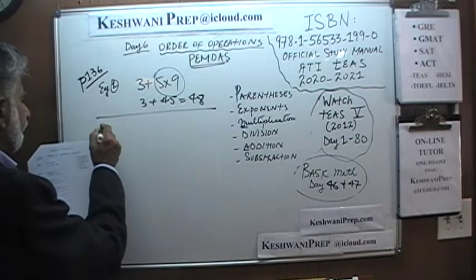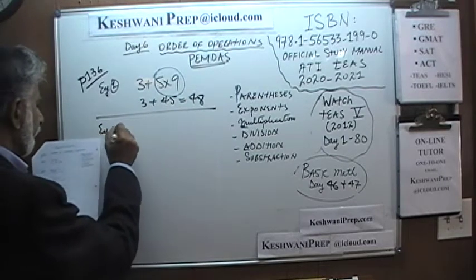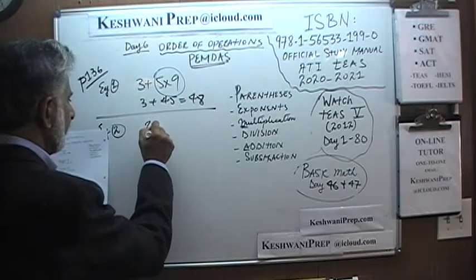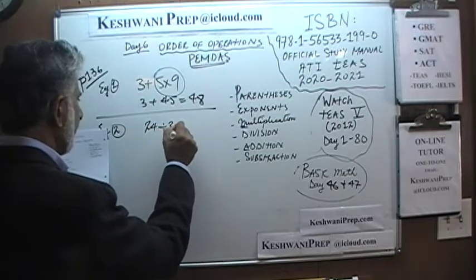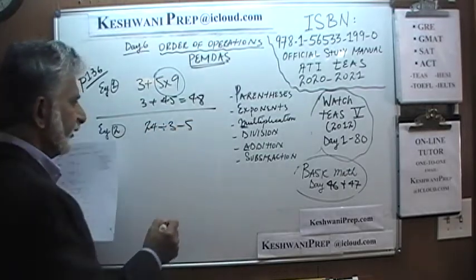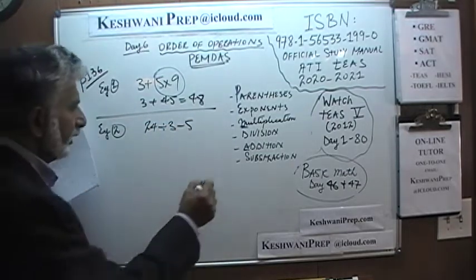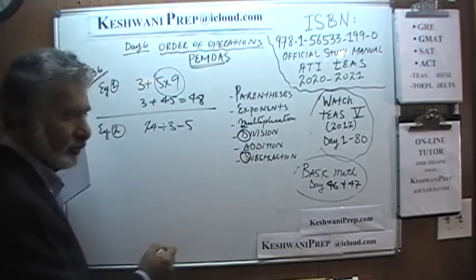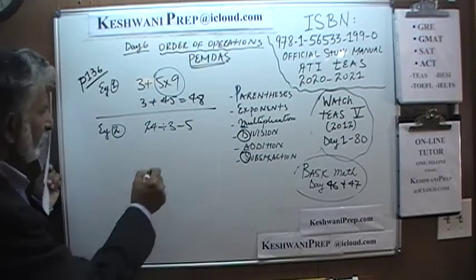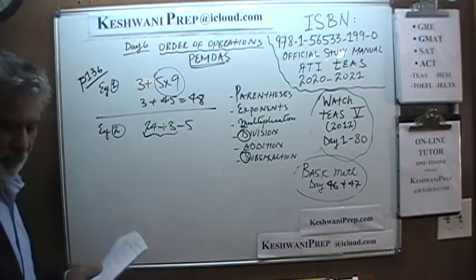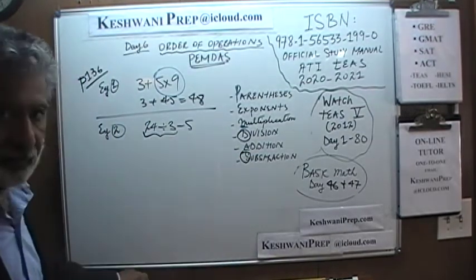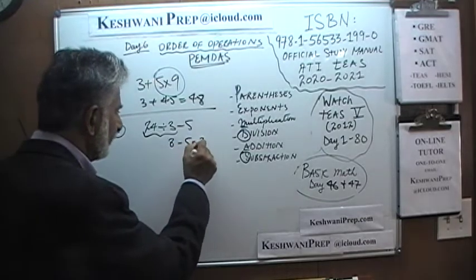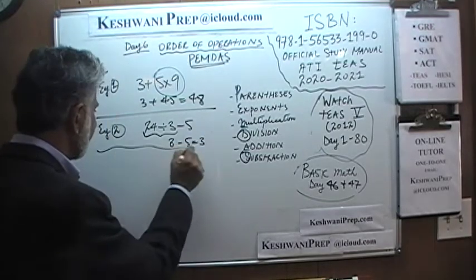Number 2: 24 divided by 3 minus 5. Again the same thing — division comes before subtraction, so we do division first. 24 divided by 3 is 8, and 8 minus 5 is 3. Very simple, very straightforward.